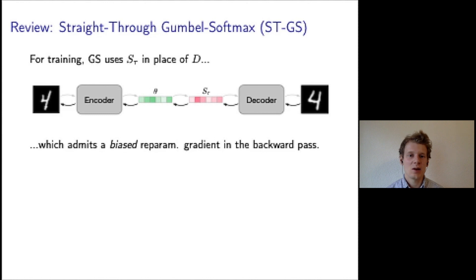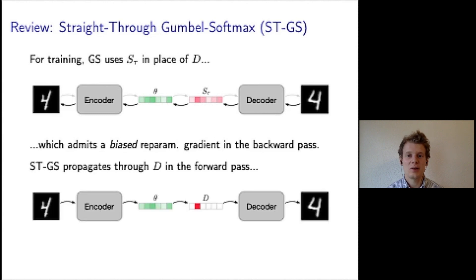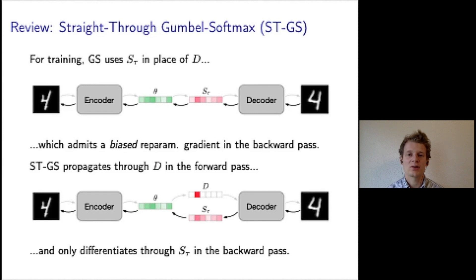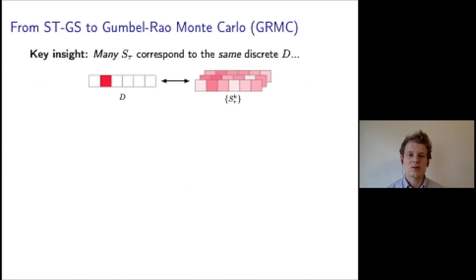In particular, the continuous variable s admits a reparameterization gradient, which is used as a biased gradient estimator for learning the logits of a categorical distribution. In contrast, the straight-through variant of the Gumbel softmax still uses d in the forward pass and only differentiates through s in the backward pass.